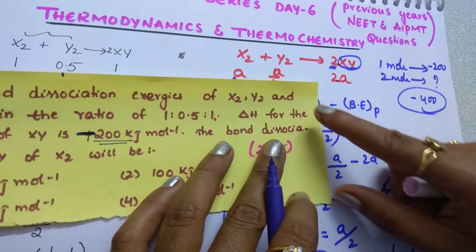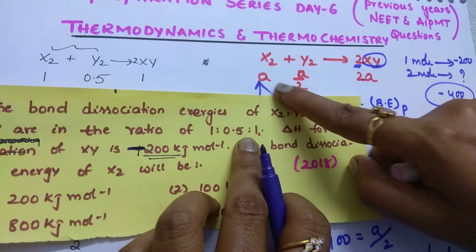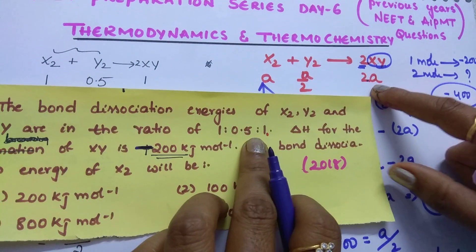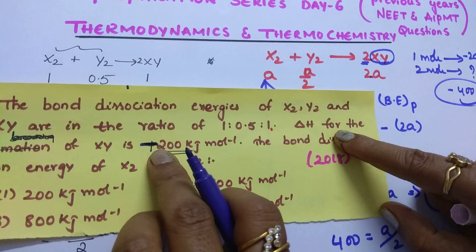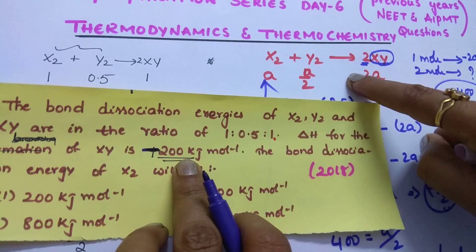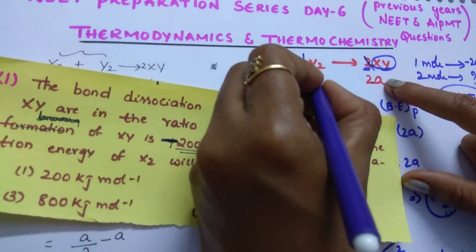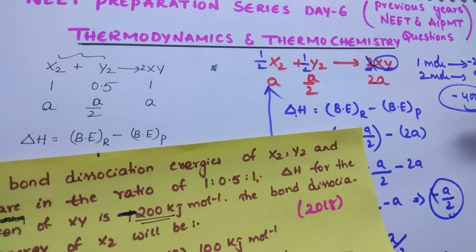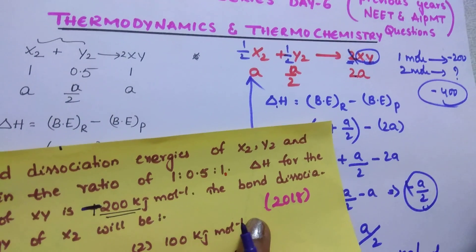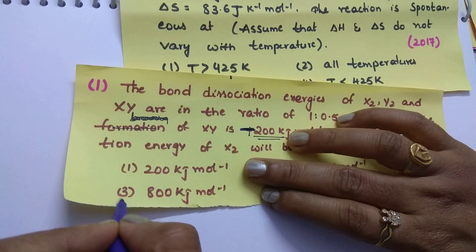Is that clear, students? We took the X2 to Y2 to XY ratio as given and wrote the standard expression. Using delta H for formation of XY for 2 moles based on the standard equation, we can also take half values for 1 mole to get the bond dissociation energy of X2. The correct answer is the third option.